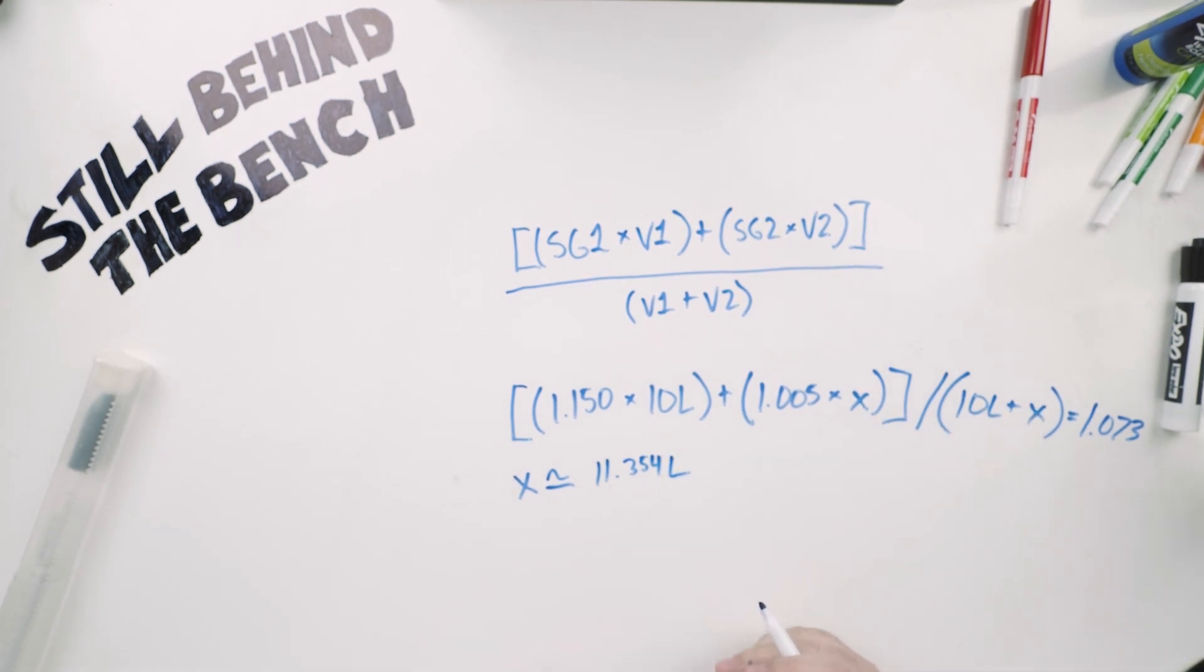So you'd add 11.354 liters of your tap water which has this specific gravity to your 10 liters and you would get a final gravity or a final starting gravity of 1.073. It's really that easy.